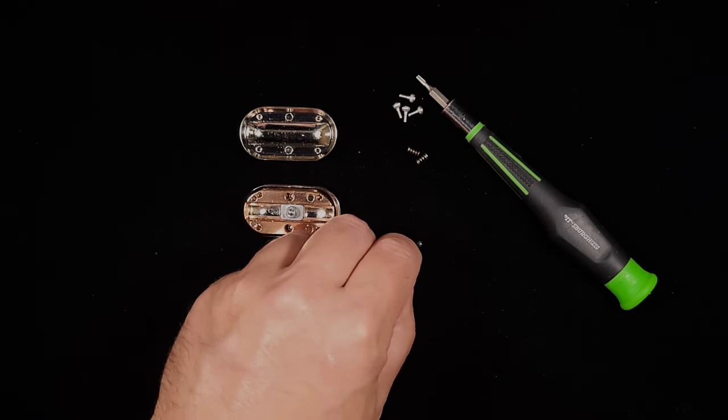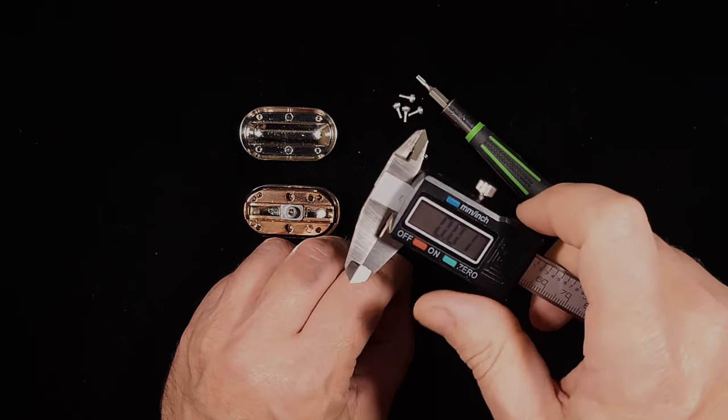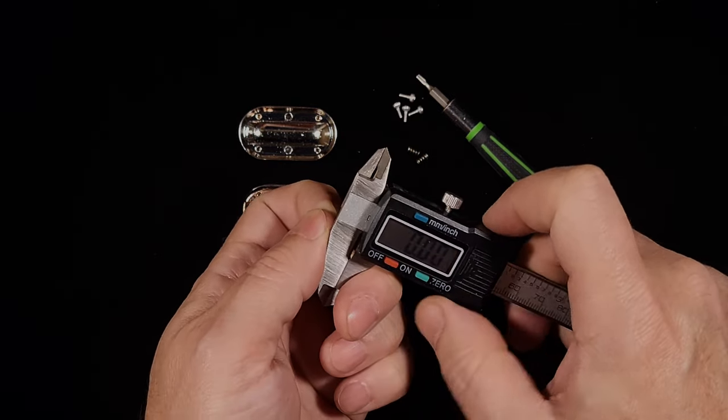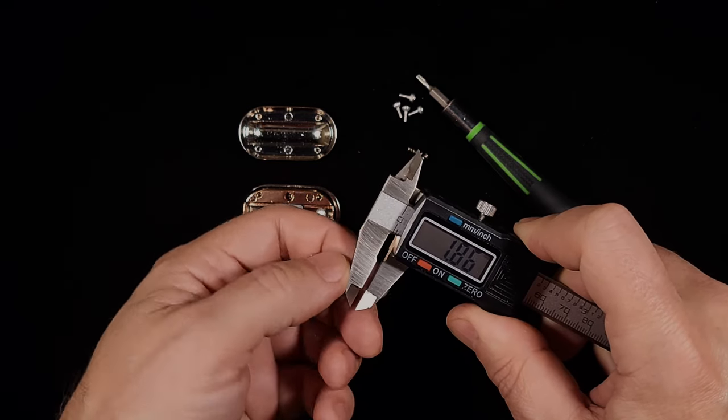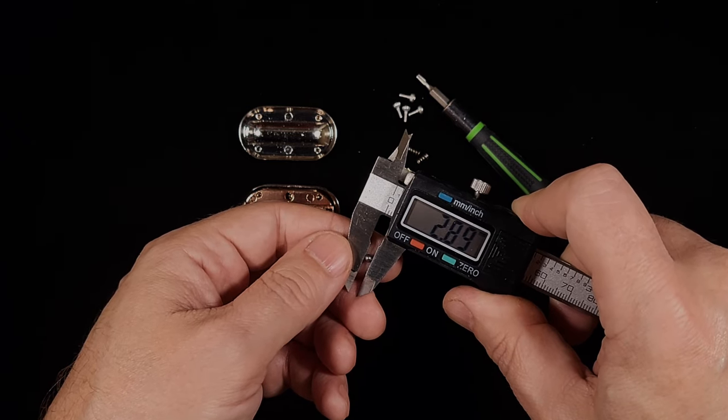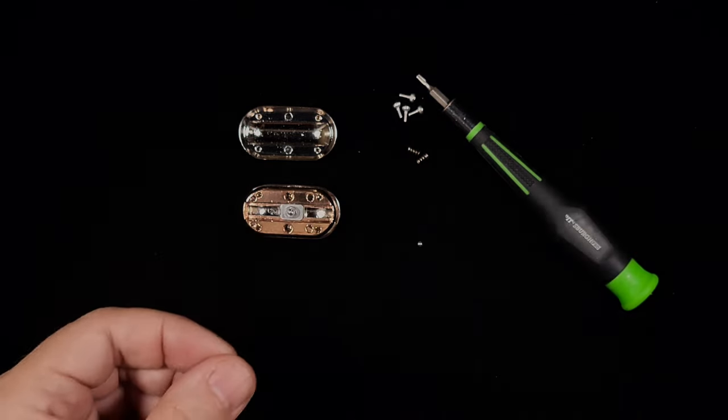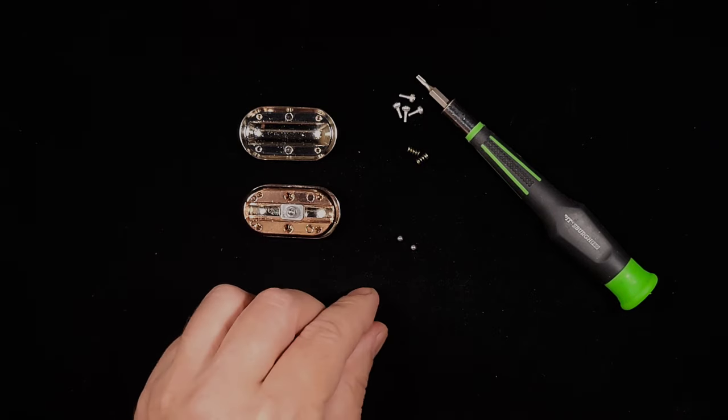Good old untrustworthy Harbor Freight digital calipers. That's as close as we're going to get. Okay, about 2.88, probably 2.87. Roughly three millimeter balls. That's what I imagined them to be.